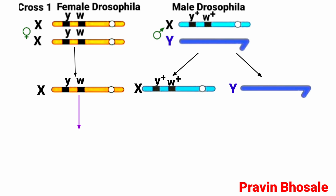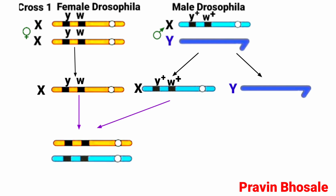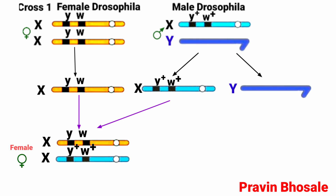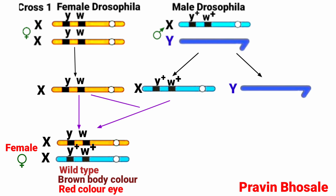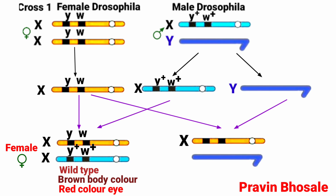When the female gamete is fertilized by the sperm containing the X chromosome, the combination is XX with small y and small w on one X, and y+ and w+ on the other. This is a female wild type, expressing brown body color and red eye color. If the female gamete is fertilized by the sperm containing the Y chromosome, the combination is XY — the X chromosome carries small y and small w, and the Y chromosome has no body or eye color genes — so the male will have yellow body and white eye color.